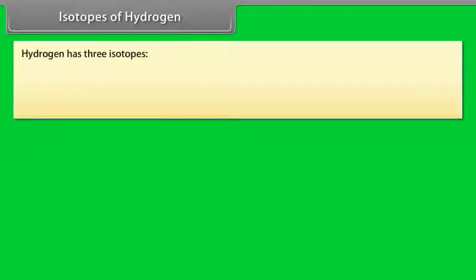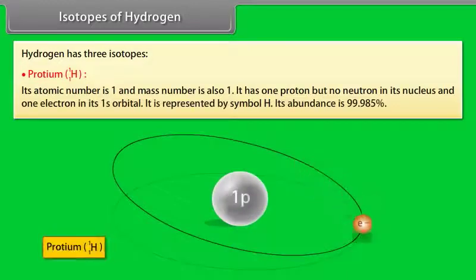Isotopes of Hydrogen. Hydrogen has three isotopes. Protium. Its atomic number is 1 and mass number is also 1. It has one proton but no neutron in its nucleus and one electron in its 1s orbital. It is represented by symbol H. Its abundance is 99.985%.